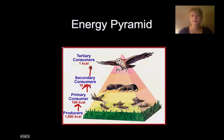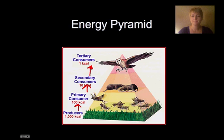These animals don't contain as much energy as the animals below them do. Then you go up to the tertiary consumers — those top predators — and they have 10 percent less energy again. These insects eat the grass but they don't have to eat a huge amount of that biomass.